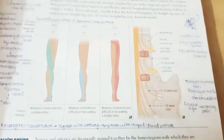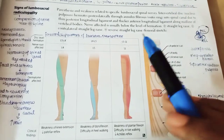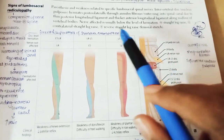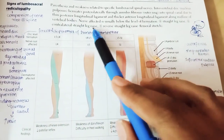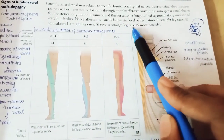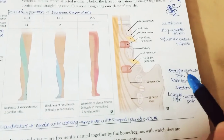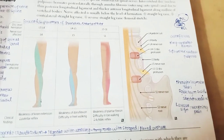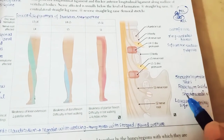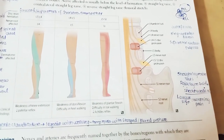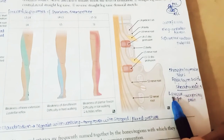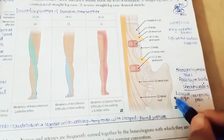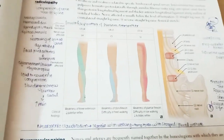Tests include the straight leg raise, contralateral straight leg raise, and reverse straight leg raise. In the straight leg test, we raise the leg on the symptomatic side to stretch the sciatic nerve. The Lasègue sign is positive when raising the leg causes worsening pain.